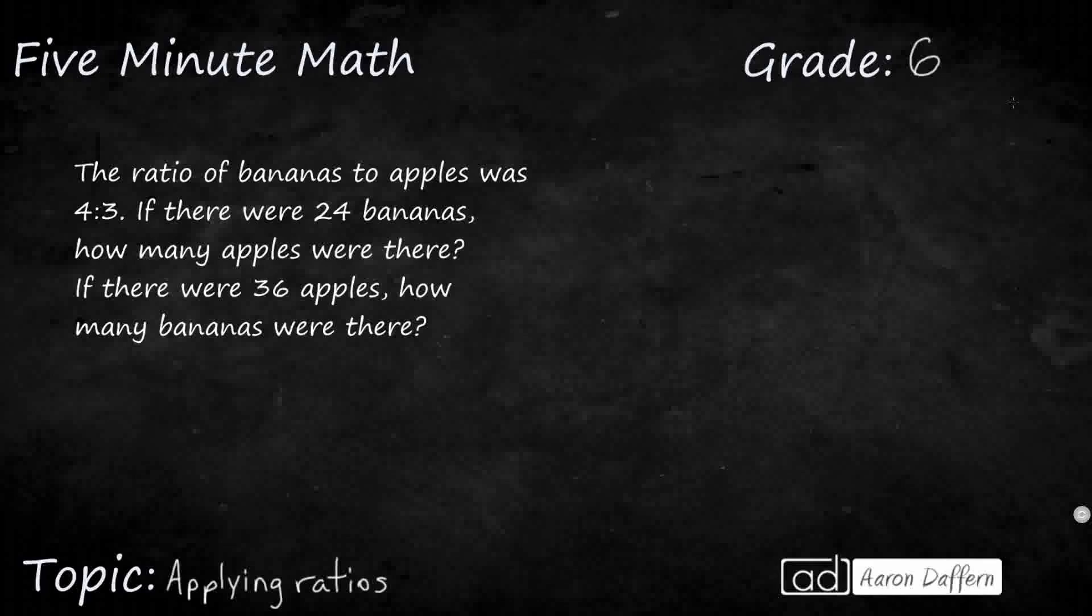So they give us the ratio of bananas to apples, okay? So they're going to give us 4 to 3. So I've got 4 bananas to 3 apples. So they tell us there are 24 bananas. How many apples were there? So if there were 24 bananas, let's set it up like this. I'm going to set it up as a proportion here. So 4 bananas and 3 apples, that's my ratio right there.